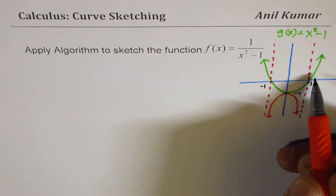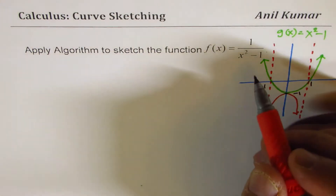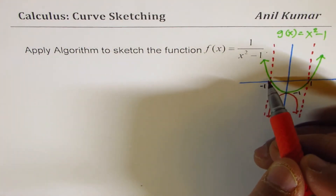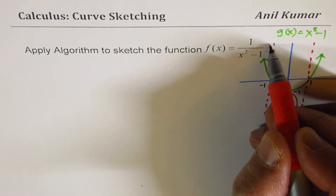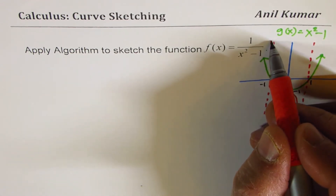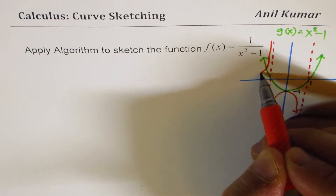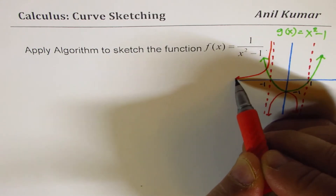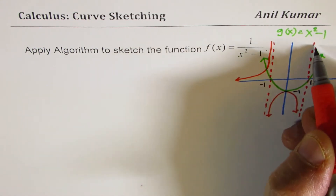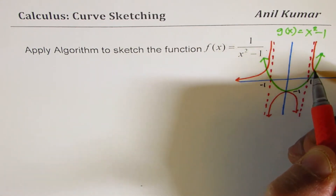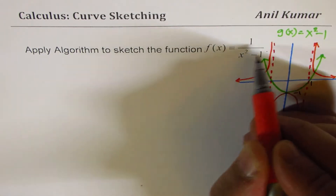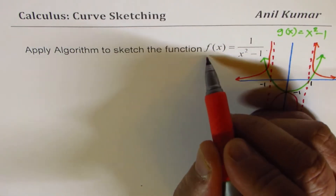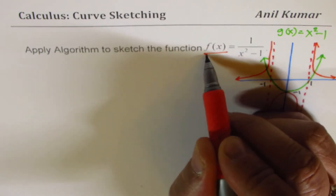On the positive side, the reciprocal has to be positive. As you're approaching 0, you're approaching positive infinity, so the graph will be kind of like this. So effectively, this is the graph for the function f(x).